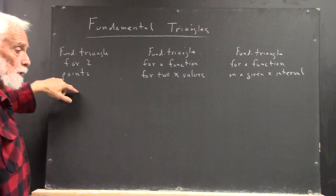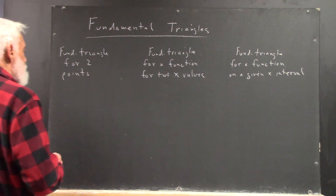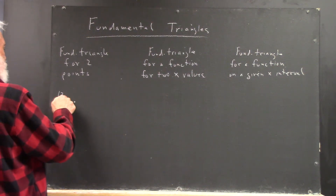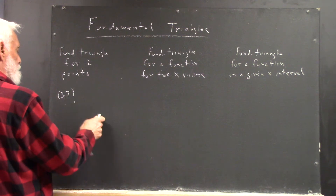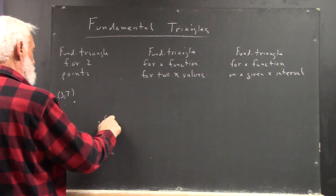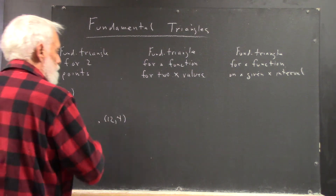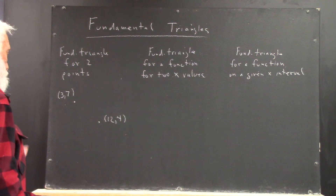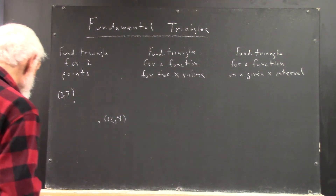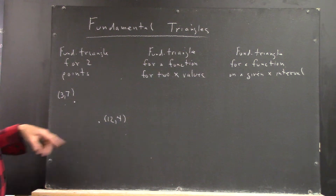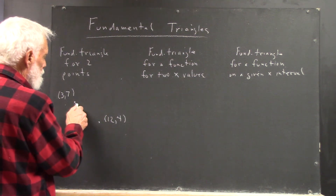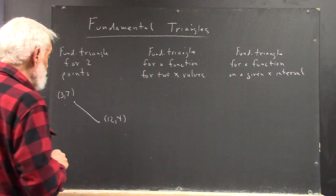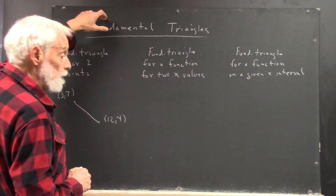So, a fundamental triangle for two points. Let's say we have the points (3, 7) and (12, 4) on some coordinate axes. I don't need an x and y axis to do this — I've got two points. I sketch the line segment between them. That segment is going to be the hypotenuse of my fundamental triangle.